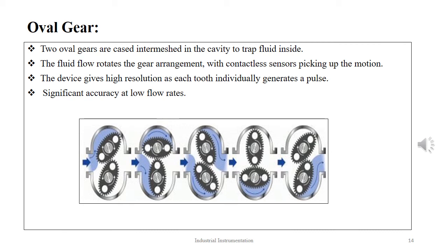The next type is the oval gear. Here, two oval gears are cased and intermeshed in the cavity to trap fluid inside. The fluid flow rotates the gear arrangement with contactless sensors picking up the motion. The device gives high resolution as each gear individually generates a pulse.